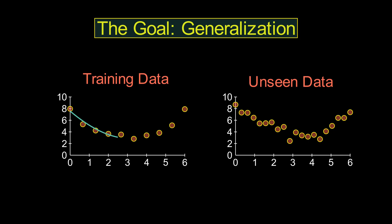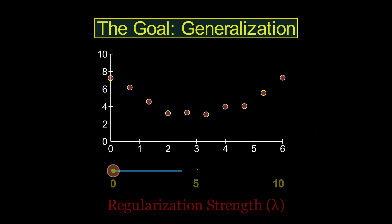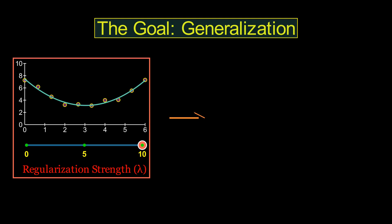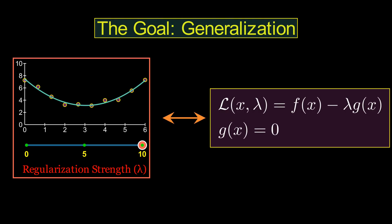The real goal of machine learning is generalization. To build models that perform well on unseen data. That's where regularization comes in. Regularization prevents the model from growing unwieldy and ensures it learns patterns that truly matter. Surprisingly, regularization is just another name for what physicists know as the Lagrange multiplier method.